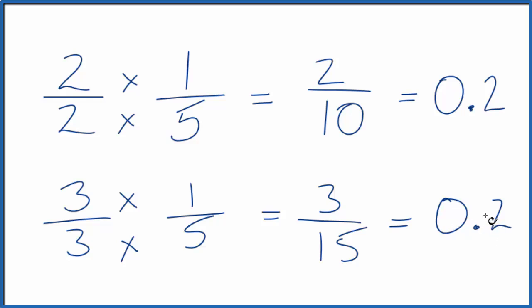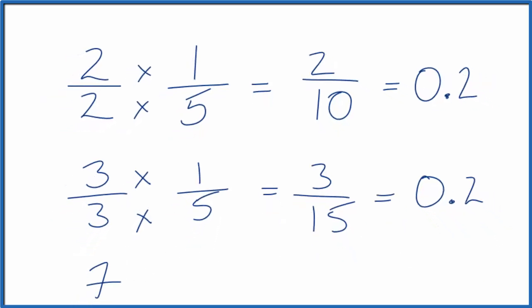They both equal the decimal, zero point two. One last one, seven over seven.